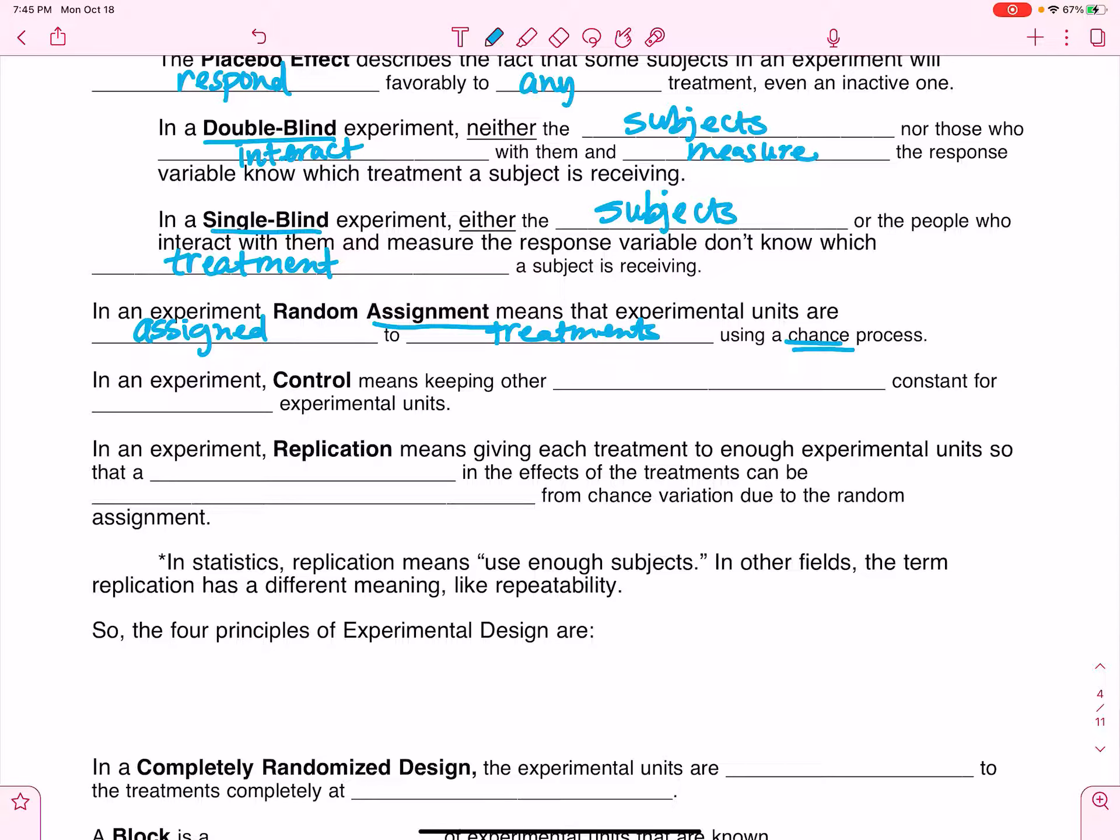You're flipping a coin, rolling a die, picking numbers out of a hat, anything like that. It has to be a random assignment. Also, notice that we want to randomly assign the experimental units or participants to the treatments, not the other way around. We're not randomly assigning treatments to the individuals. We're randomly assigning the individuals to a treatment.